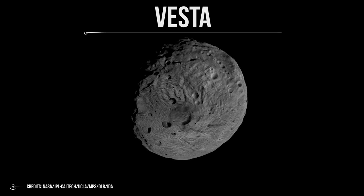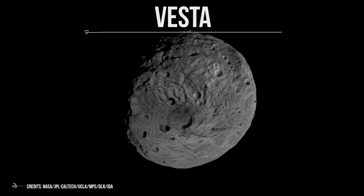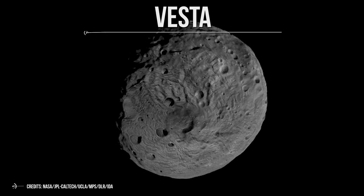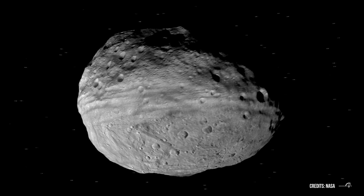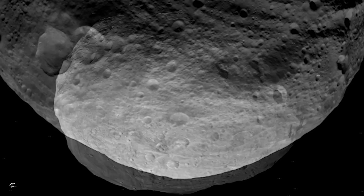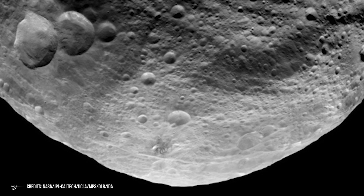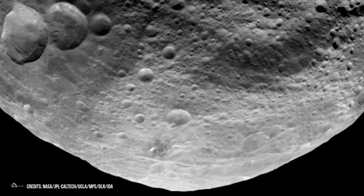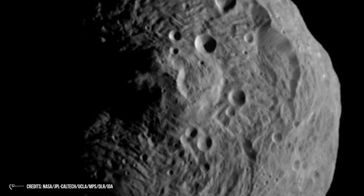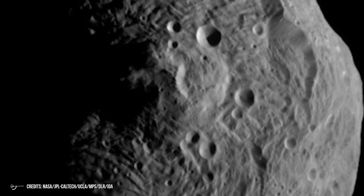Vesta is named after the goddess of the hearth and the household in Roman mythology. It holds the record as the second-most massive body in the main asteroid belt, and it accounts for almost nine percent of the total mass of all asteroids. What the Dawn mission found is that Vesta is almost spherical, and so it's nearly classified as a dwarf planet. It's actually a very peculiar asteroid — unlike most of them, Vesta has separated into crust, mantle, and core, a characteristic called differentiation, much like Earth. The Dawn mission wanted to unveil the secrets of Vesta, and one of these was to understand how and why the differentiation happened. Luckily, we have an answer.